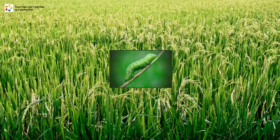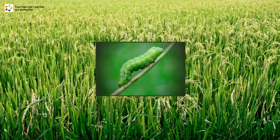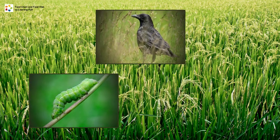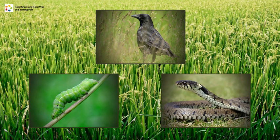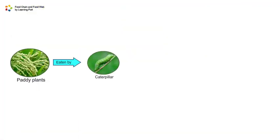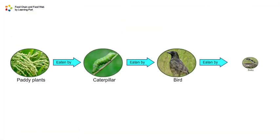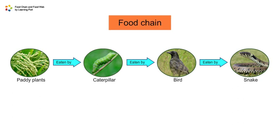A caterpillar eats patty plants, a bird eats the caterpillar, and the bird is eaten by a snake. This feeding relationship between organisms is known as the food chain.